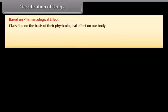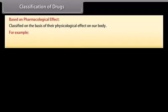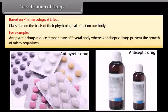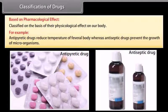Classification of drugs: Drugs can be classified in several ways. Based on pharmacological effect: drugs are classified on the basis of their physiological effect on our body. For example, antipyretic drugs reduce the temperature of a fevered body, whereas antiseptic drugs prevent the growth of microorganisms. Based on a particular biochemical process: some drugs affect biochemical processes.